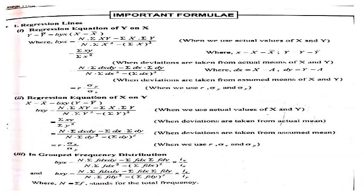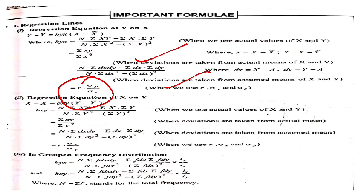Ab important formulas par aate hain. Regression line y on x calculate karna ho to formula: y − ȳ = byx(x − x̄). byx kaise calculate karein — actual mean use karne par: byx = [n·Σxy − Σx·Σy] / [n·Σx² − (Σx)²]. Assumed mean use karne par: byx = [n·Σdxdy − Σdx·Σdy] / [n·Σdx² − (Σdx)²]. Agar correlation coefficient given ho: byx = r × (σy / σx).